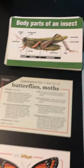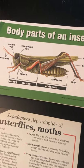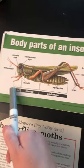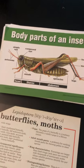Let's go ahead and start out with the body parts of an insect. You have the head, the thorax, and then the abdomen.